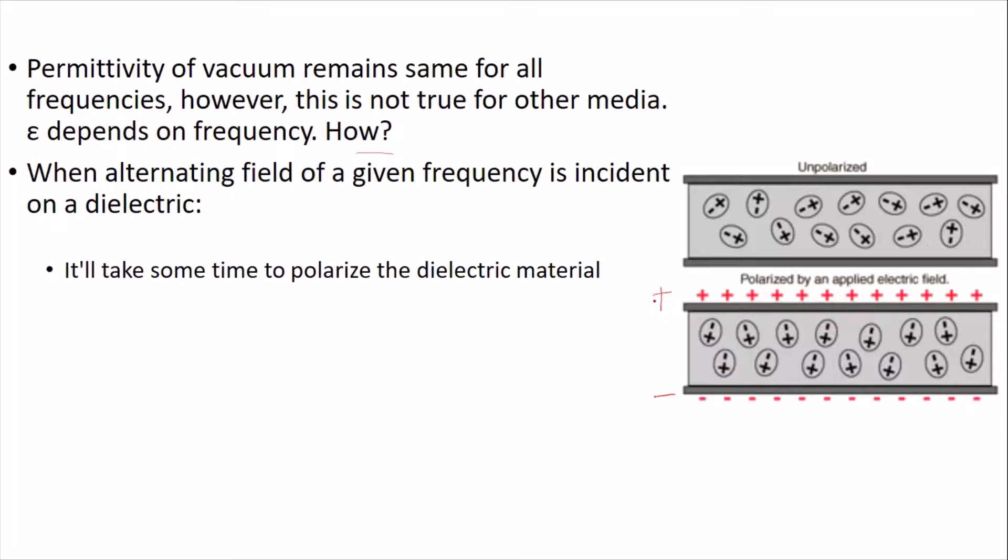However, if this field is time-changing, for this portion of time the positive is on this side and negative is on this side. But for this portion of time, the negative comes over here and positive comes over here. It means that this polarization of the material will also change as per the polarization of the incident field.